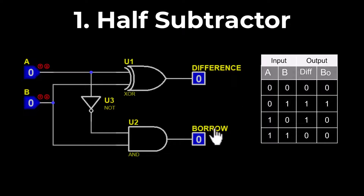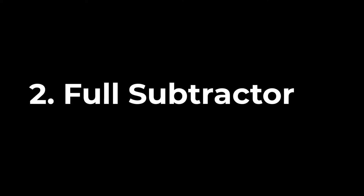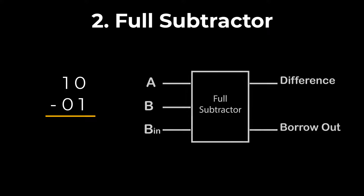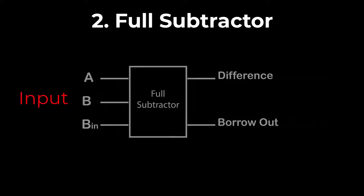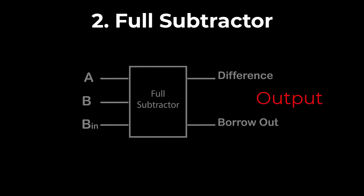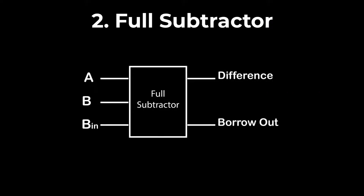A full subtractor can accept an additional third input as a borrow in. A full subtractor is a combinational circuit that performs subtraction of two binary digits, taking into account the borrow from the previous adjacent lower minuend bit. It has three inputs: A (minuend), B (subtrahend), and borrow in, and two outputs: the difference and the borrow out.